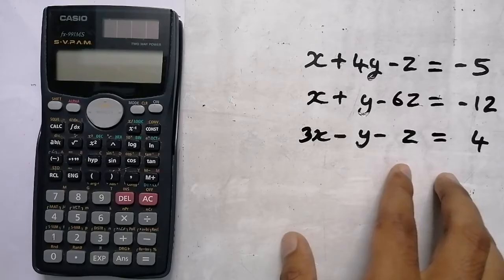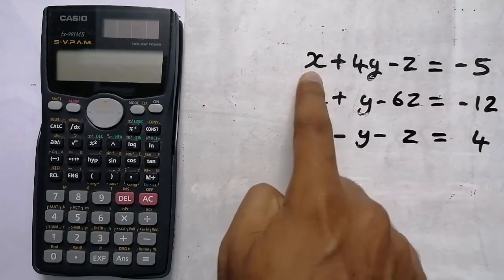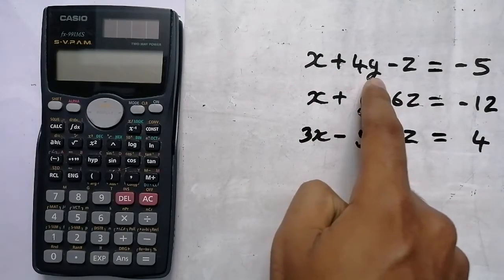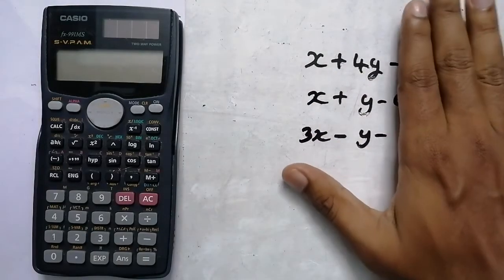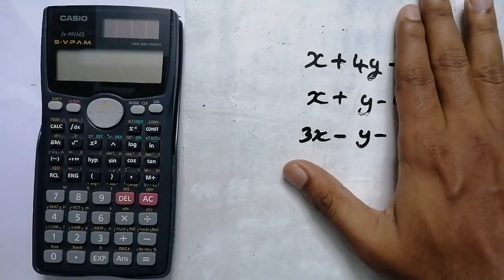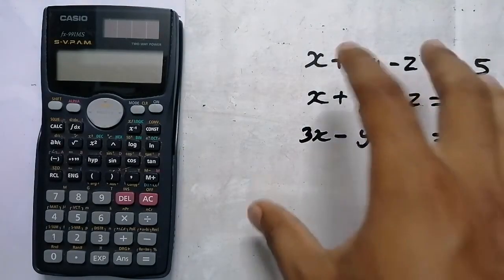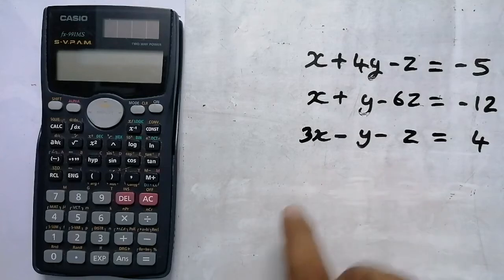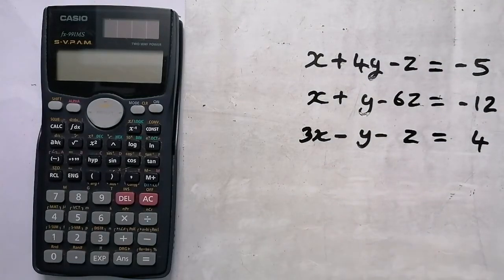These are the variables: x is a variable, y is a variable, z is a variable. The equation uses the same variables. We will assign x one value, y one value, and z one value.